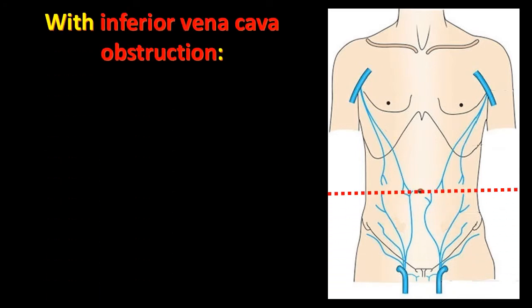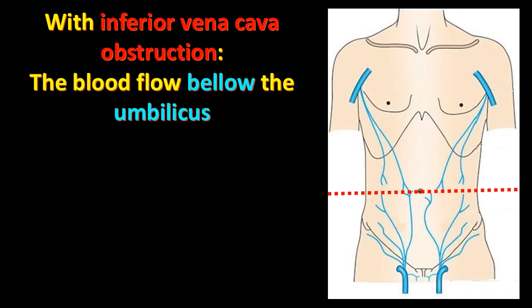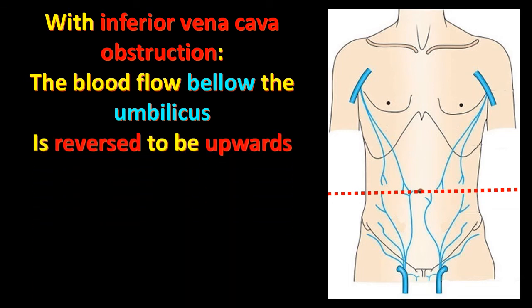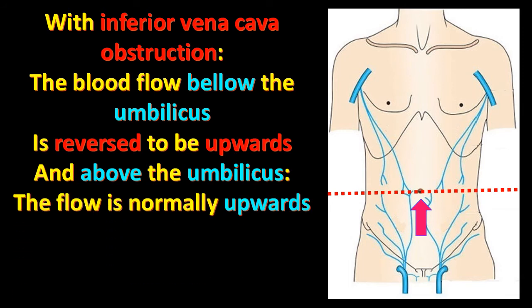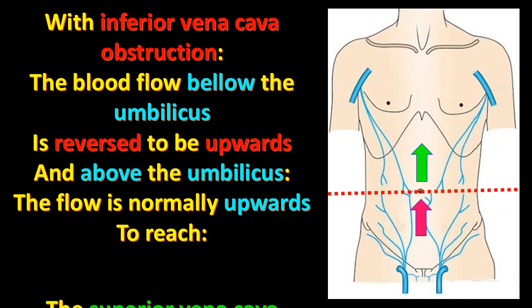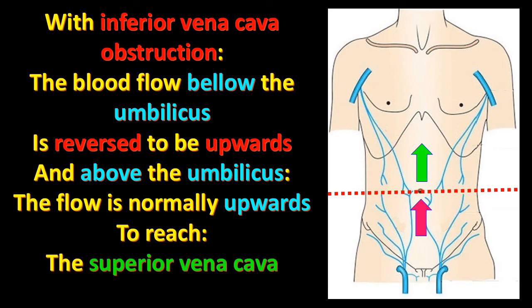With inferior vena cava obstruction, the blood flow below the umbilicus is reversed to be upward instead of going downward (red arrow). Above the umbilicus, the flow is normally upward (green arrow, normal direction). The reversed flow below and the normal upward flow above both reach finally the superior vena cava.